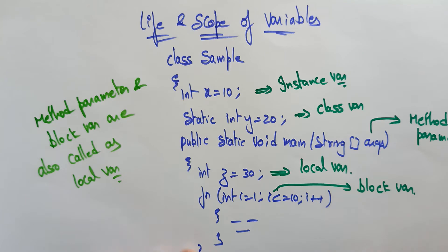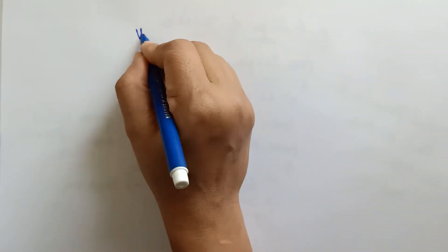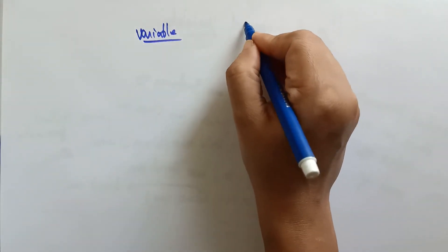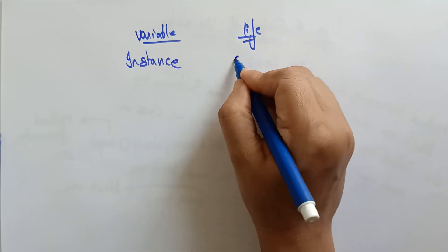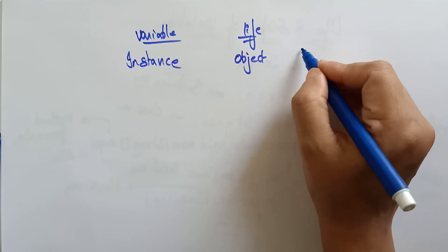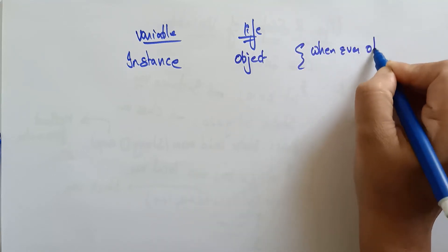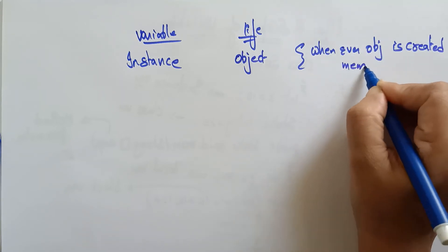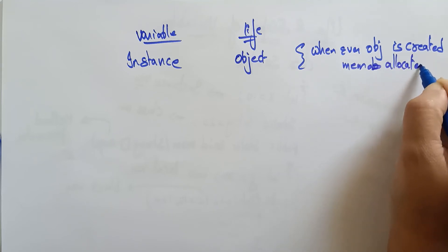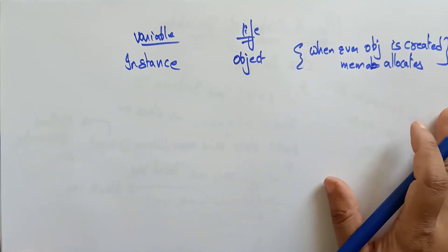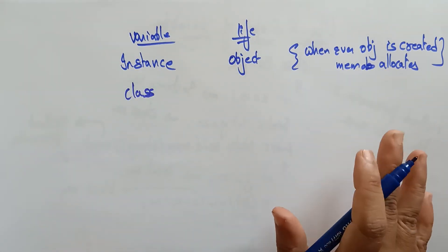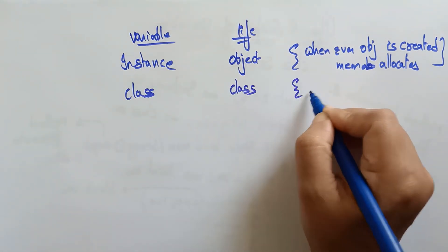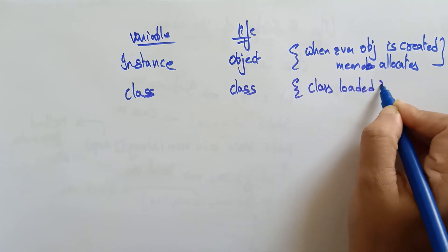Now let's see the life of these variables. For the instance variable, memory is allocated whenever an object is created. Until the object is present, the instance variable's life is there. For the class variable, their life is whenever the class is loaded — whenever the class is loaded, the class variable's life is there.